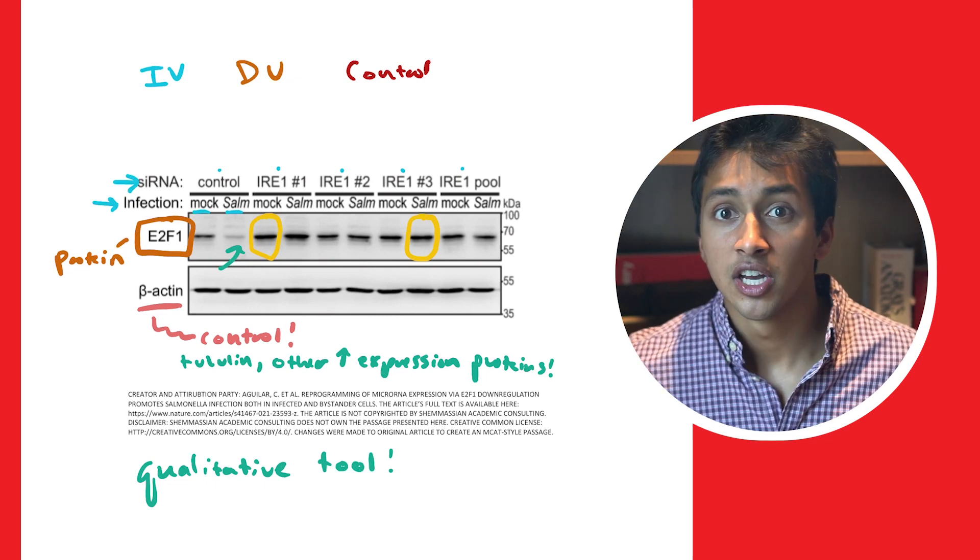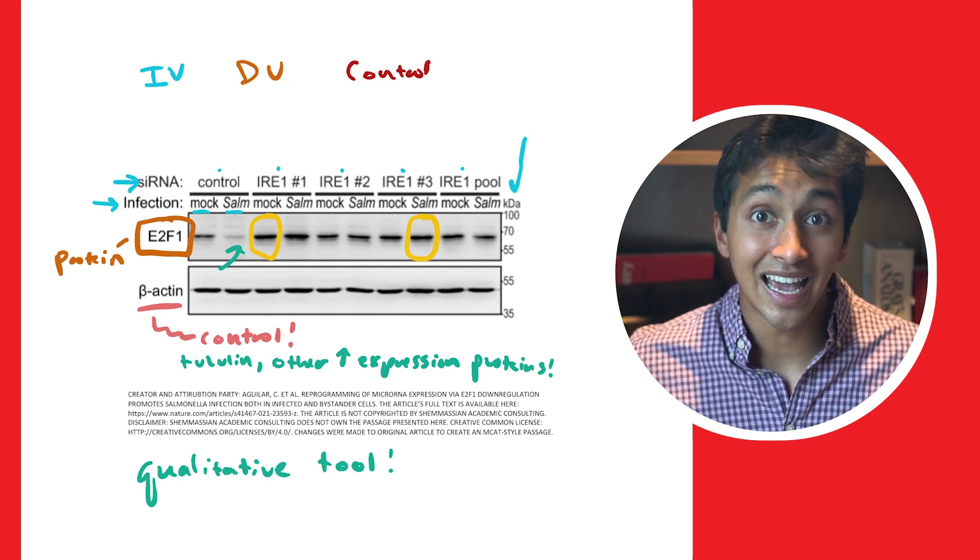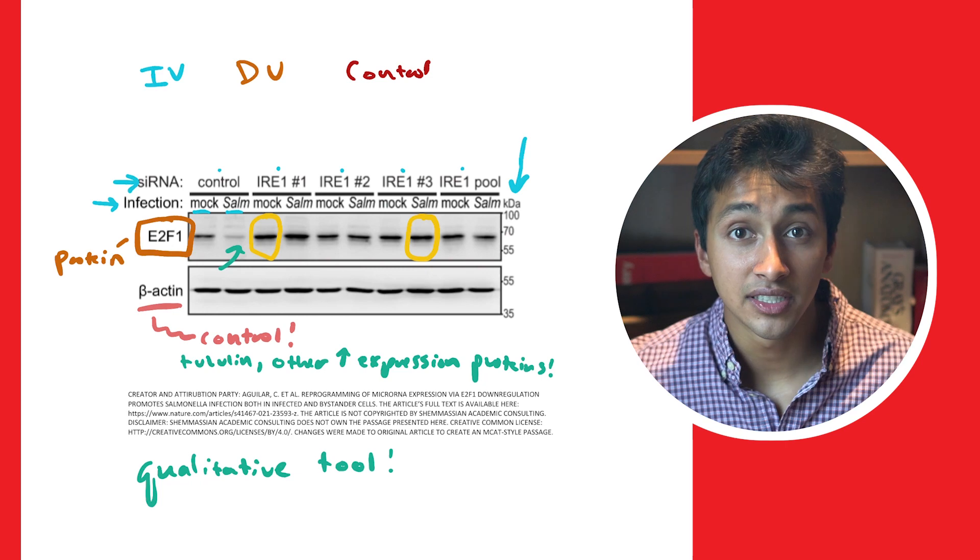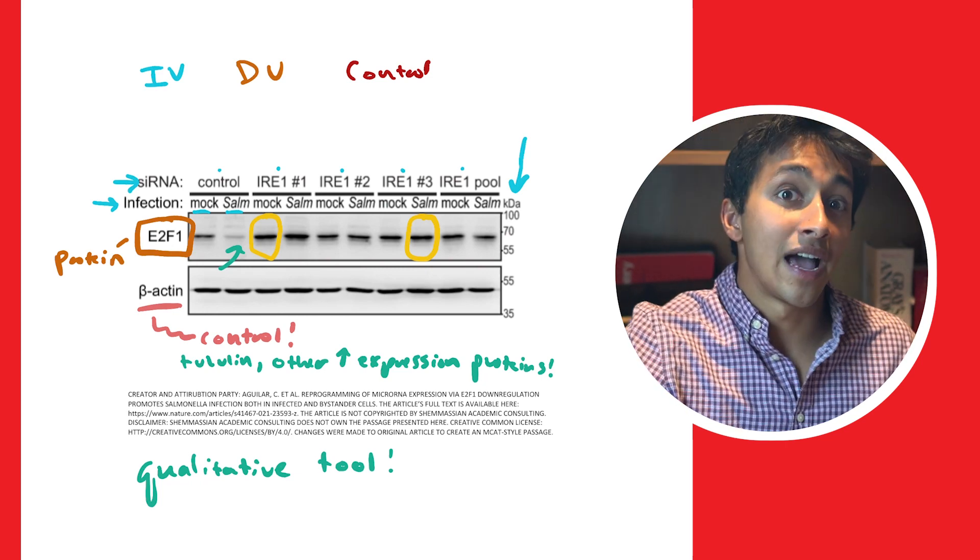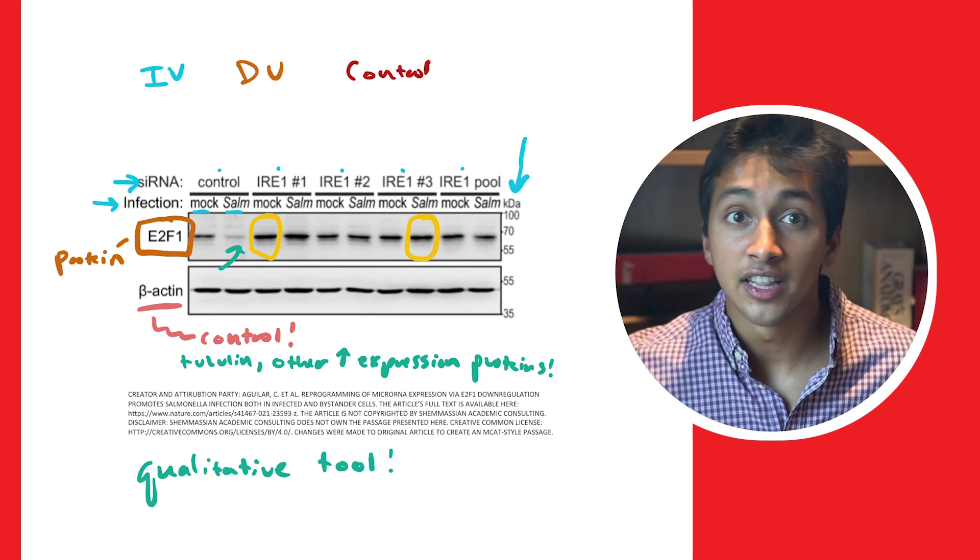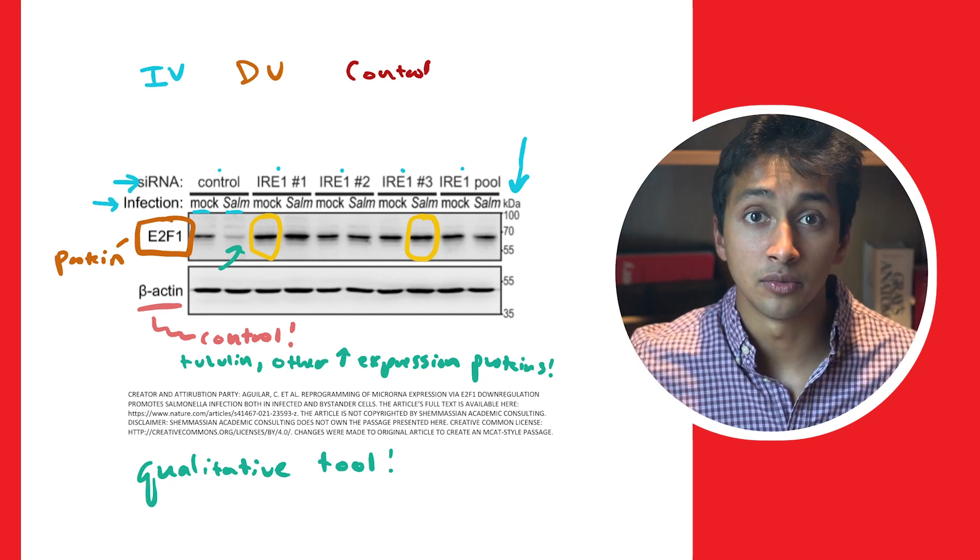Finally, along the right side of the gel, notice the numbers that say KDA. This stands for kilodaltons, and it's a unit for measuring the weight of the protein. The lighter the protein, the further down it will appear on the resulting gel, and therefore the smaller kilodalton weight it'll have.